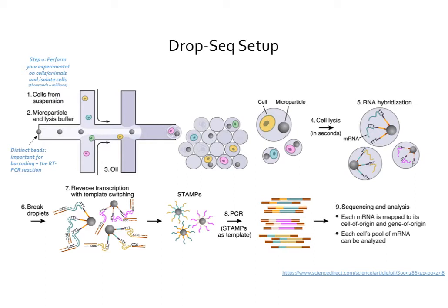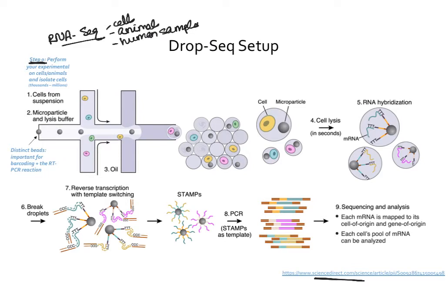This slide is from the original paper that described DROP-seq — it's their figure explaining how DROP-seq works. If you're just starting out and trying to understand how these experiments work, you don't need to worry too much about the exact fluidics; the important thing is that you understand the main ideas. For the first step, you perform whatever experimental condition you're interested in, just like RNA-seq. You can use cells, animals, or human samples, and conditions that involve treatments, time, or both — the same range of experiments as RNA-seq.